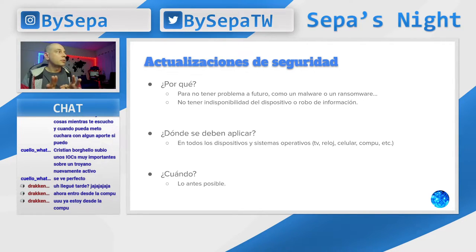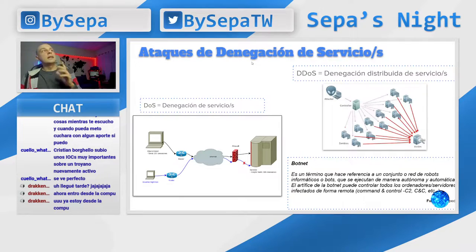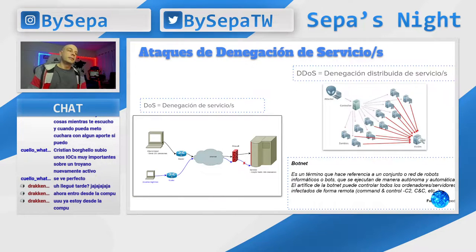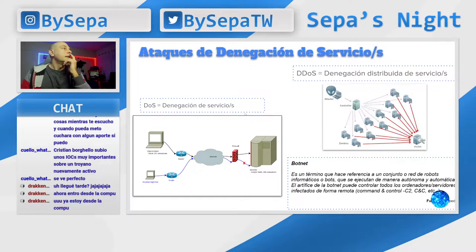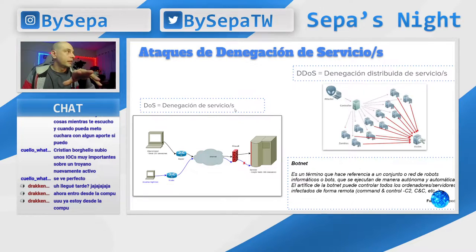Es muy importante el tema de las actualizaciones, y tengan en cuenta que hoy todo es una computadora. ¿Qué es un ataque de negación de servicio? Hoy en día se están produciendo muchos de estos ataques porque están siendo cada vez más baratos, ya que se pueden comprar. Al ser barato y producir algo muy grande a cambio —la bajada de un sistema o de un servicio— es un problema. Tenemos dos tipos de ataques: la denegación de servicio común y la denegación distribuida de servicio.